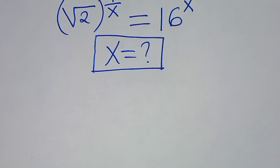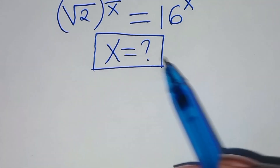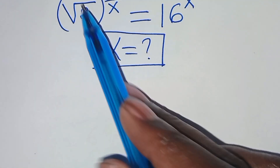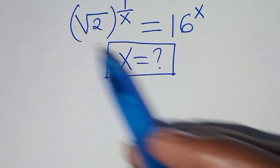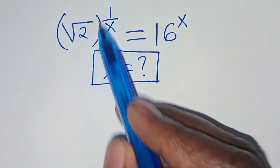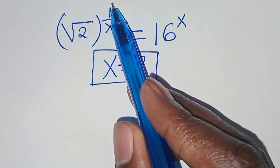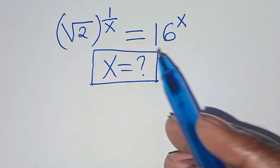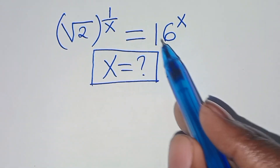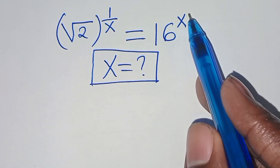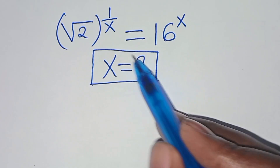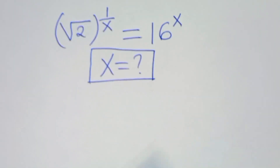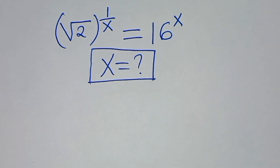Hello everyone, you're welcome to solve this nice square root math problem: the square root of 2 raised to power 1 over x is equal to 16 to power x. What is the value of x?